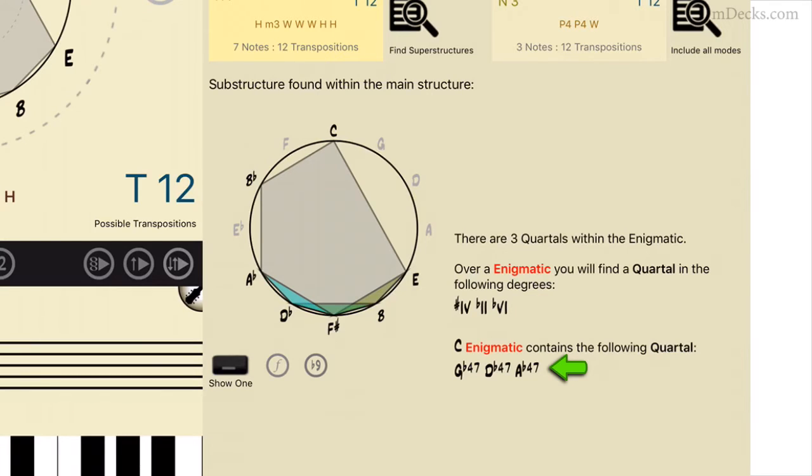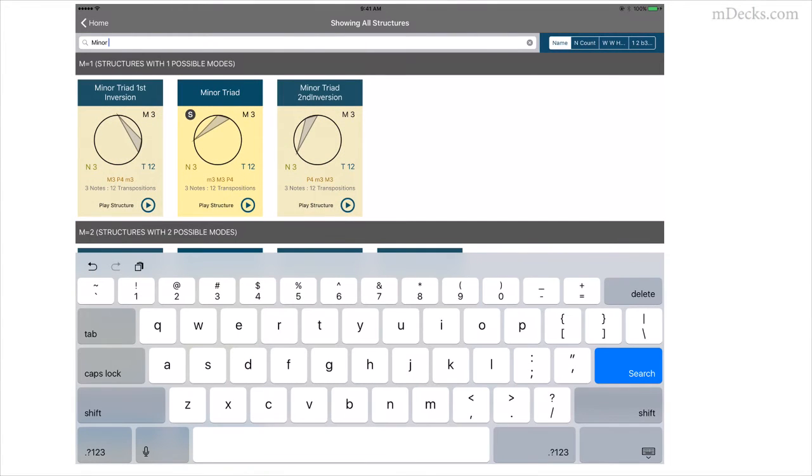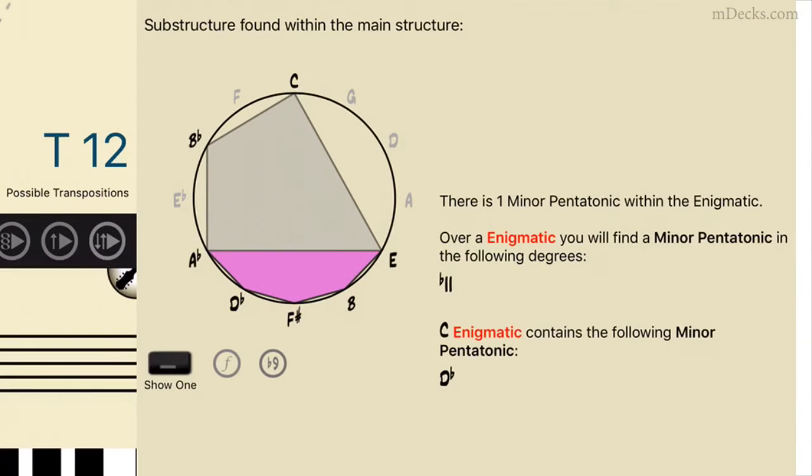In C enigmatic, that's G flat 4, 7, D flat 4, 7, and A flat 4, 7. Also, the minor pentatonic is another good choice to investigate. Cool! The D-flat minor pentatonic is a substructure of the C enigmatic. This is endless. So take it easy and look for substructures that you know well and are used to playing a lot.